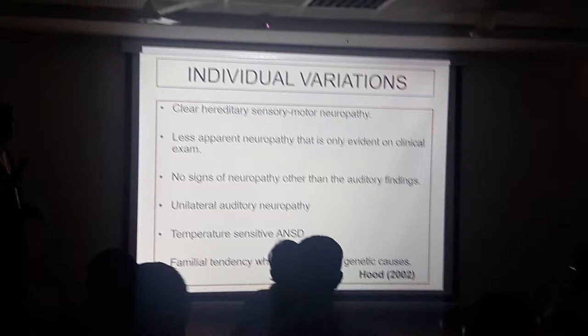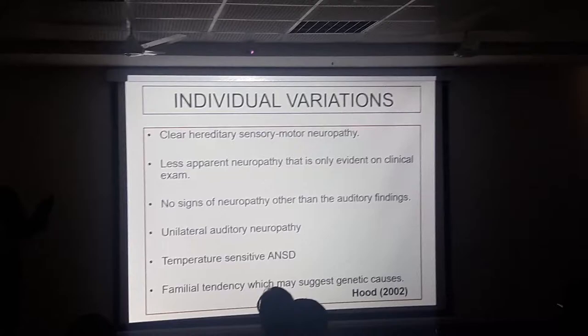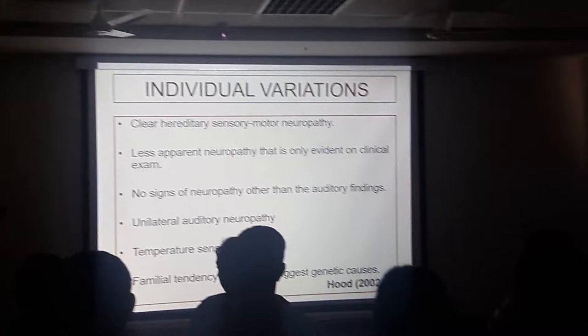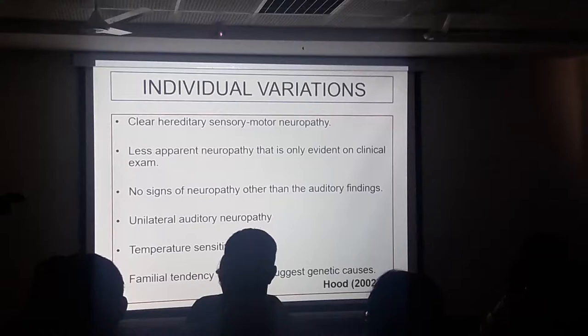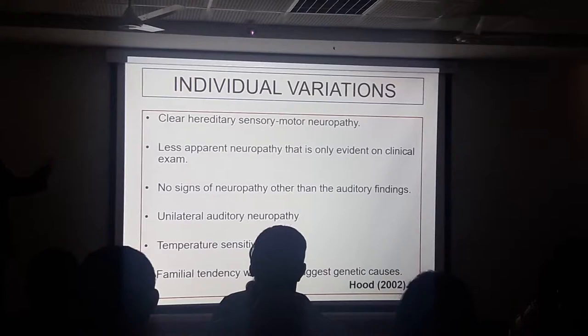Other variations include the presence of sensory motor neuropathy — there may be other motor neuropathy present alongside the auditory findings. Or all auditory neuropathy findings can be present with no apparent other abnormality. The condition may also be unilateral rather than bilateral. Some may have a temperature-sensitive presentation, and some may have a familial or genetic tendency.